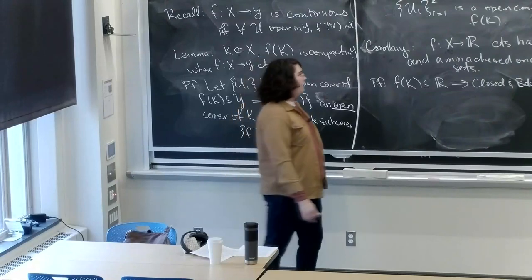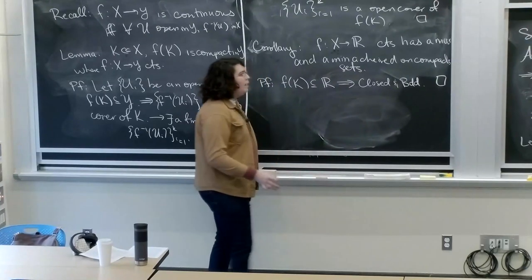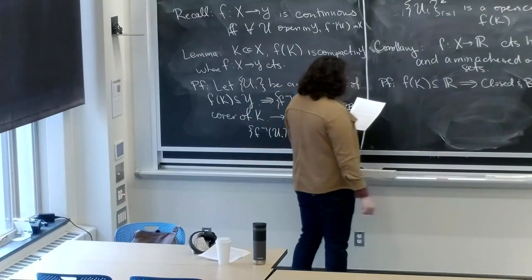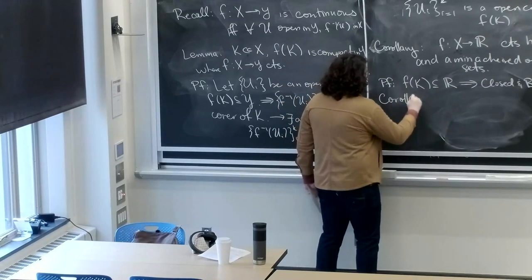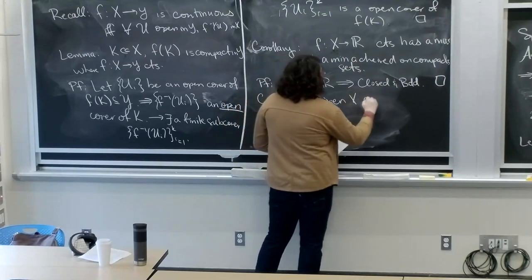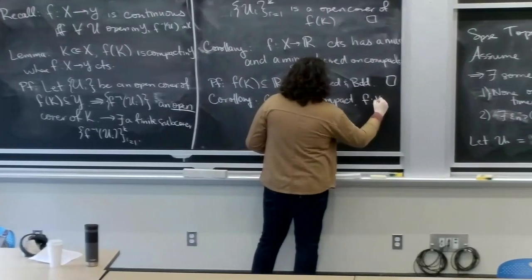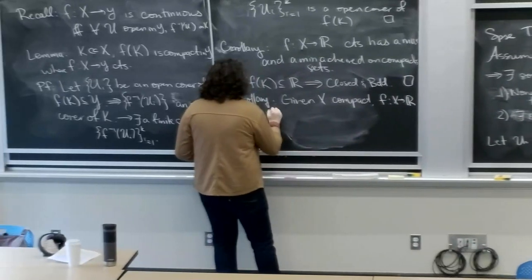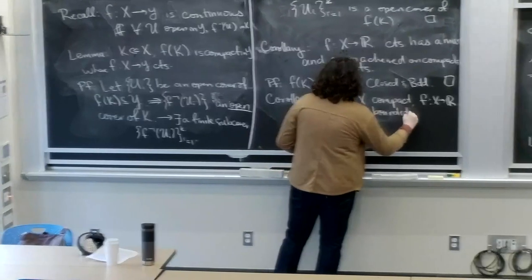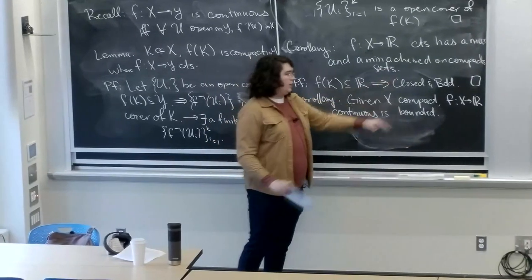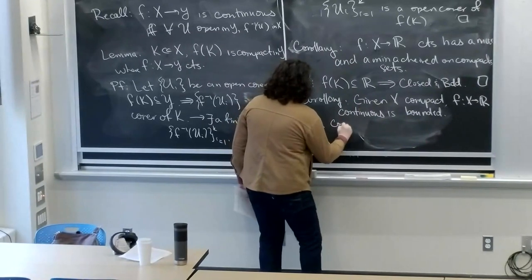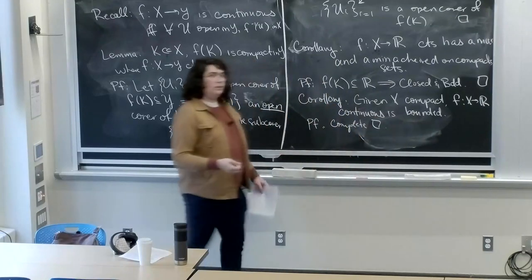One other way to think of this theorem is to take a sequence converging to the maximum and minimum — there has to be a convergent subsequence because it's sequentially compact. Corollary: given X compact and f continuous from X to R, f is bounded. Before we were using closedness; now we're using boundedness. The proof is already complete from before. Now we have one more theorem to show — Cantor's intersection theorem — which tells us things about nested sequences of compact sets.